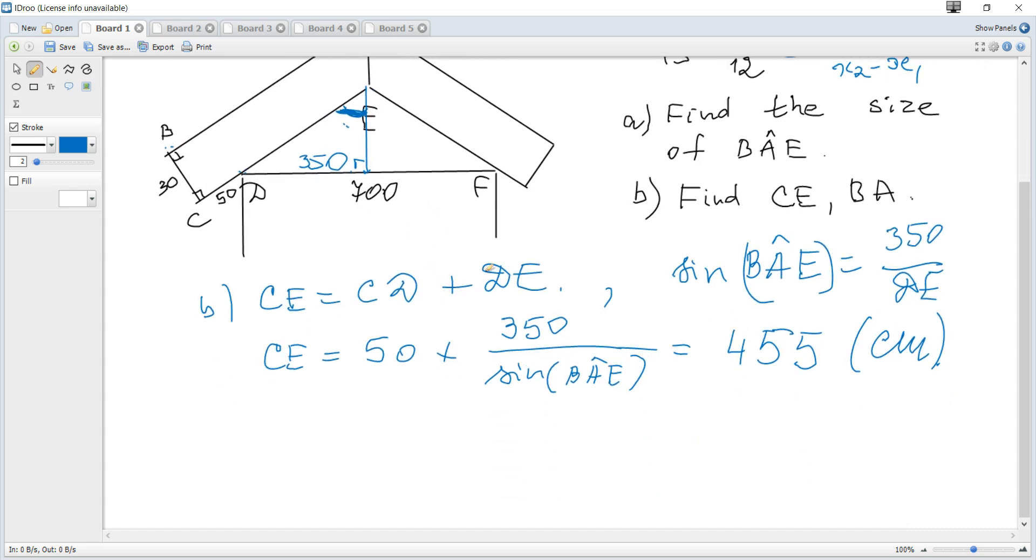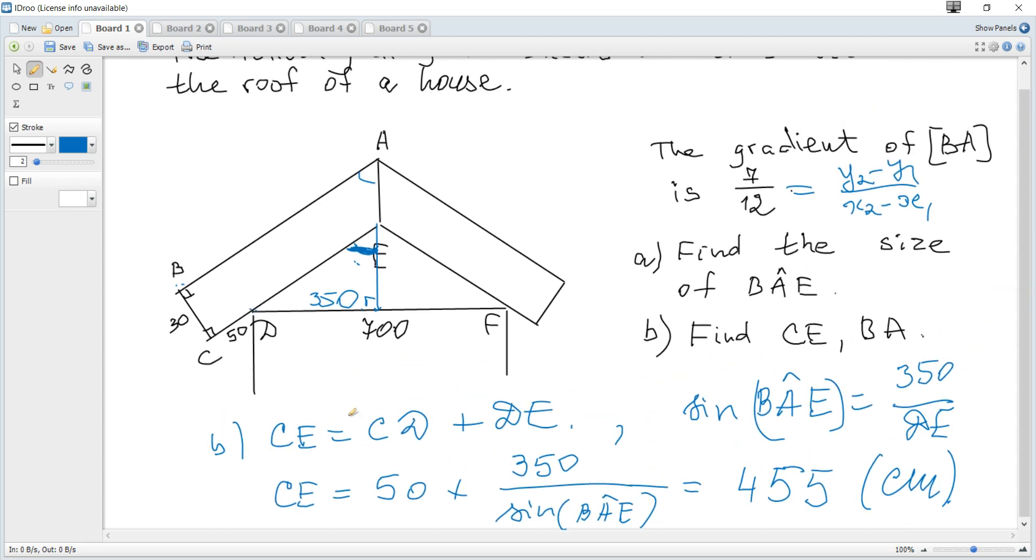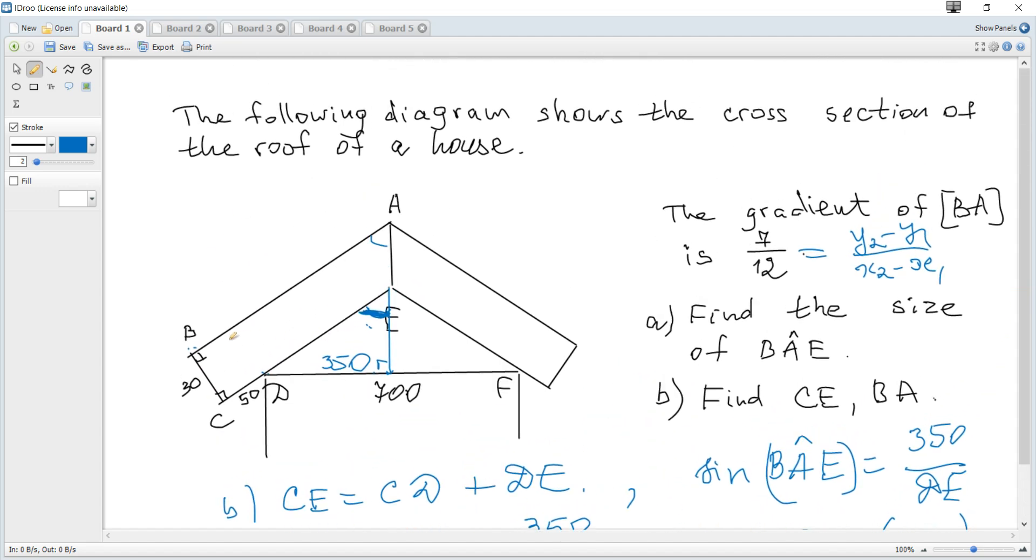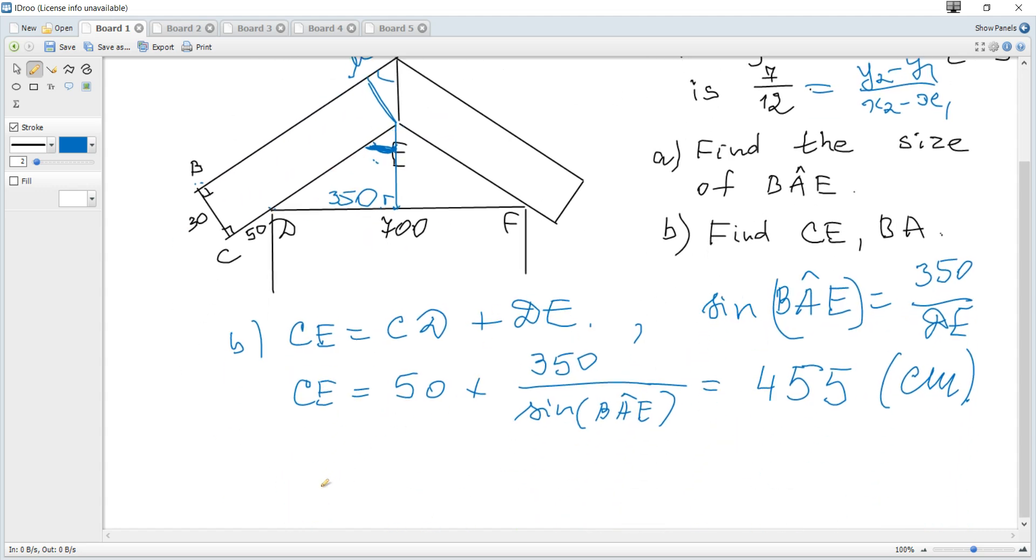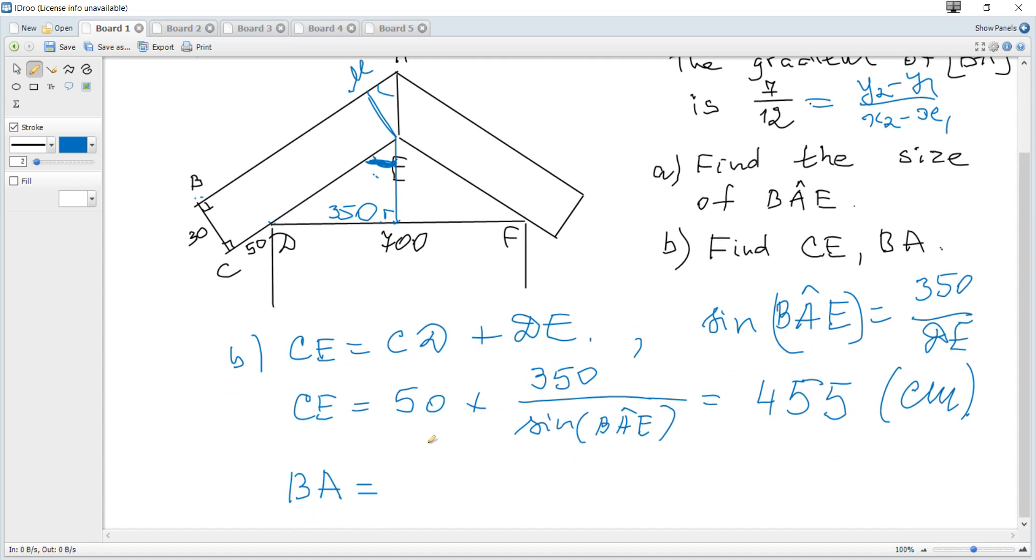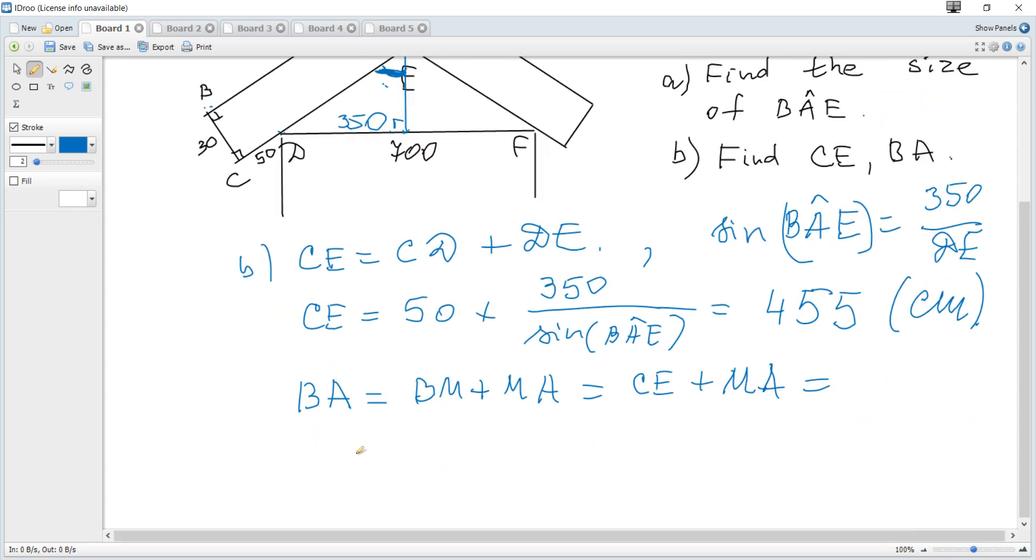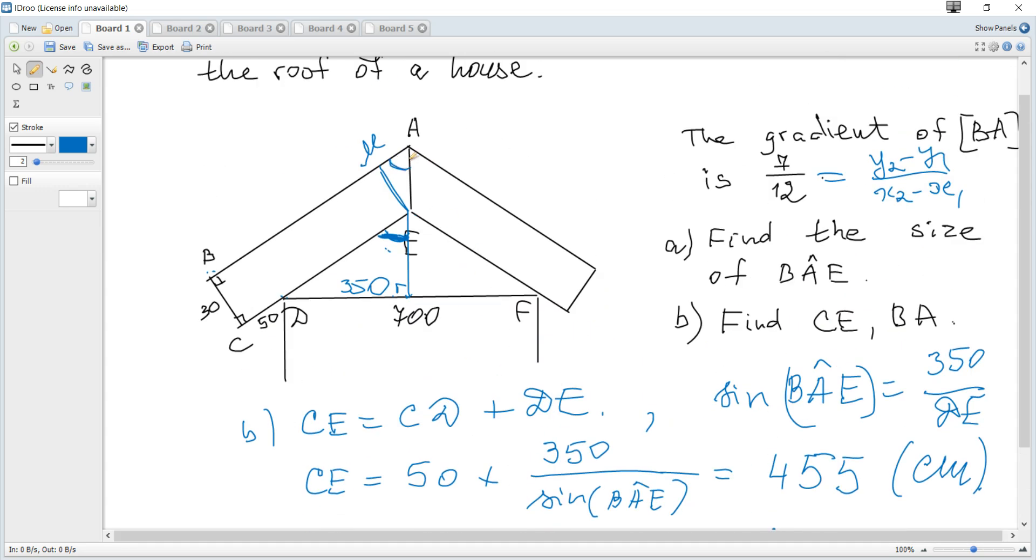To find BA, you can see that BA and CE are parallel. So let it be M. BA is BM plus MA, but BM is equal to CE. So it's CE plus MA.